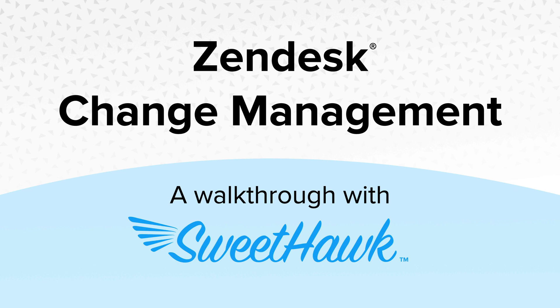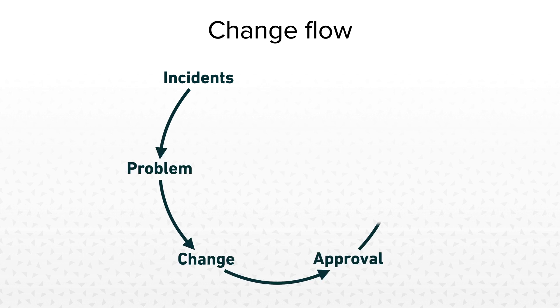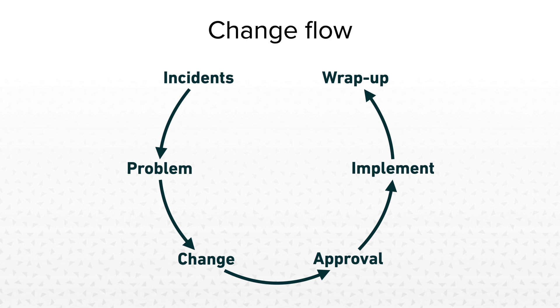In this video we'll be running through an example of a Zendesk change management flow using a combination of SweetHawk apps. The flow we'll go through today will start with a bunch of incidents linked to a problem. From the problem ticket we'll spin off a change ticket, send out for approval, talk about implementation, and then wrap things up. Note that this flow is just one example of what you can create — there are many alterations you could make to match your business requirements.